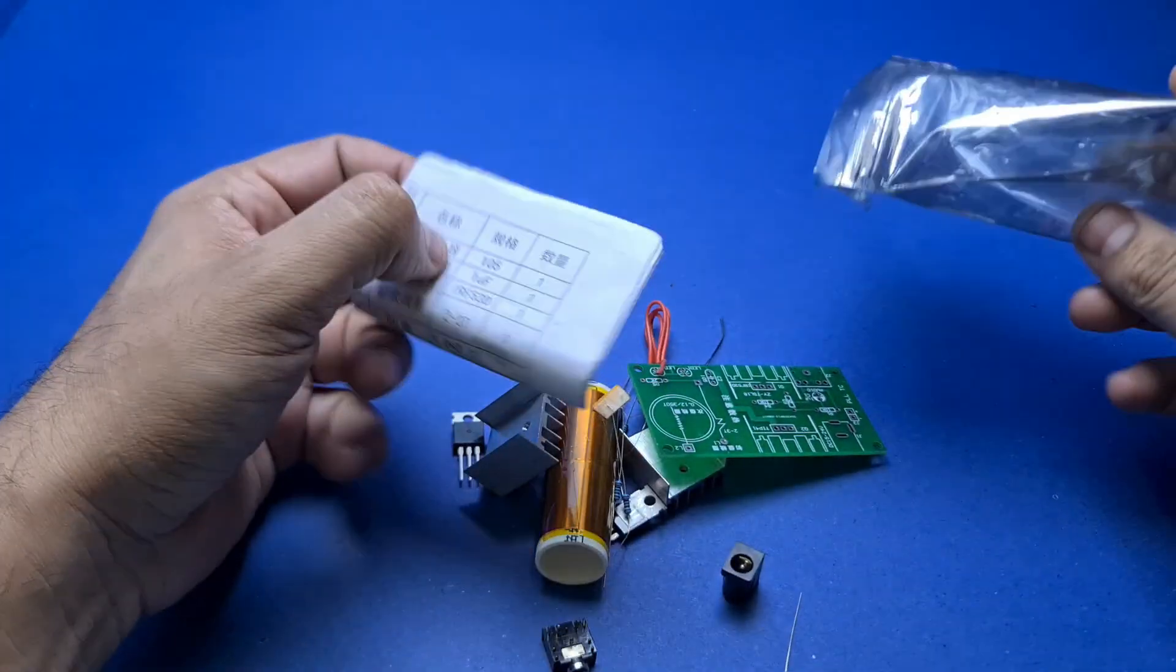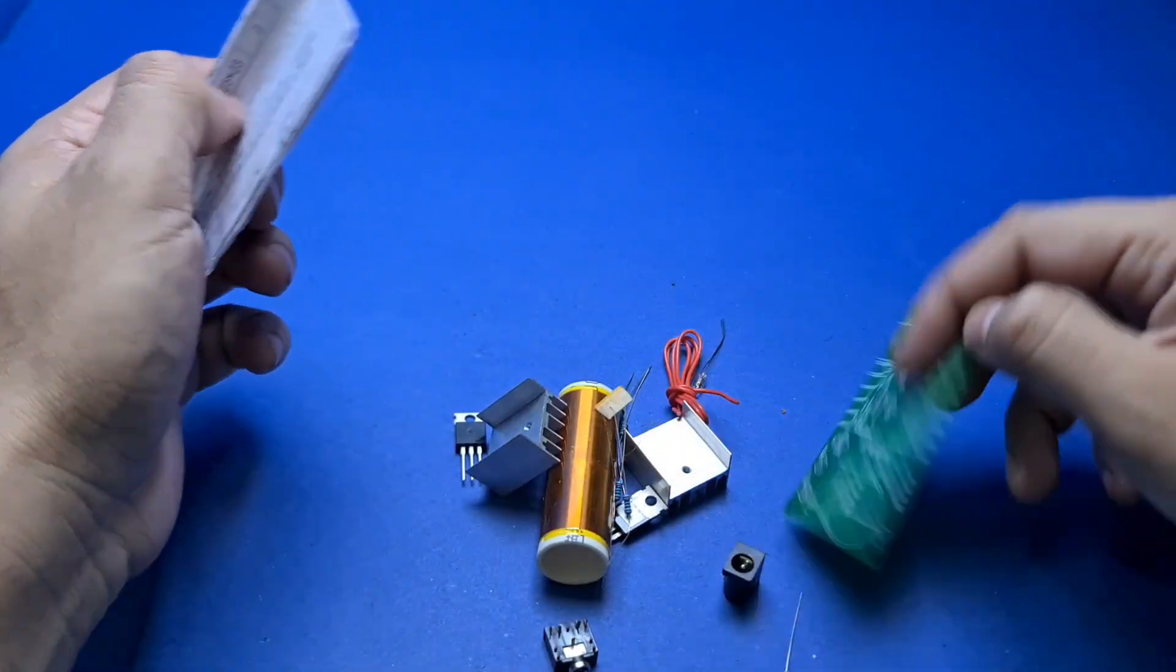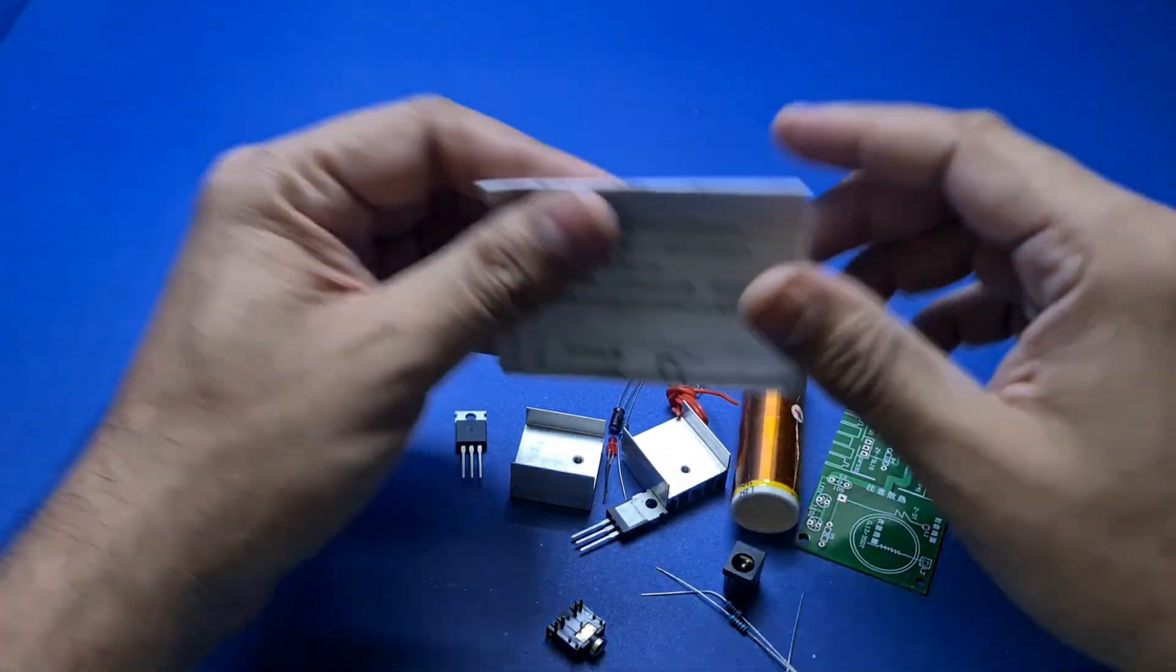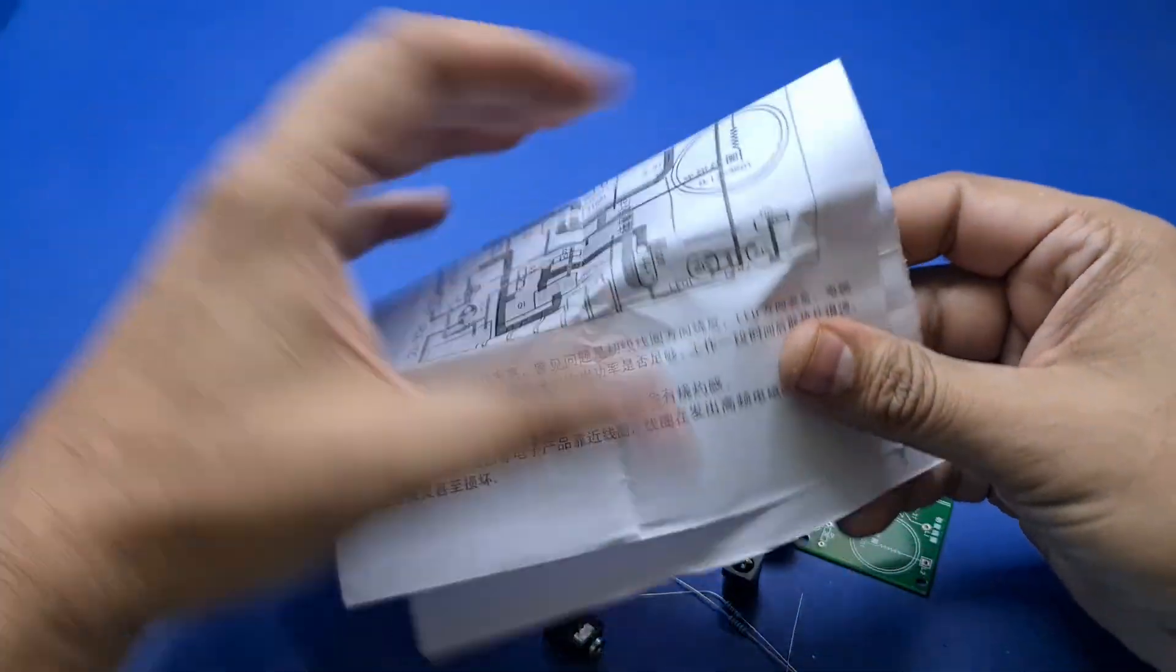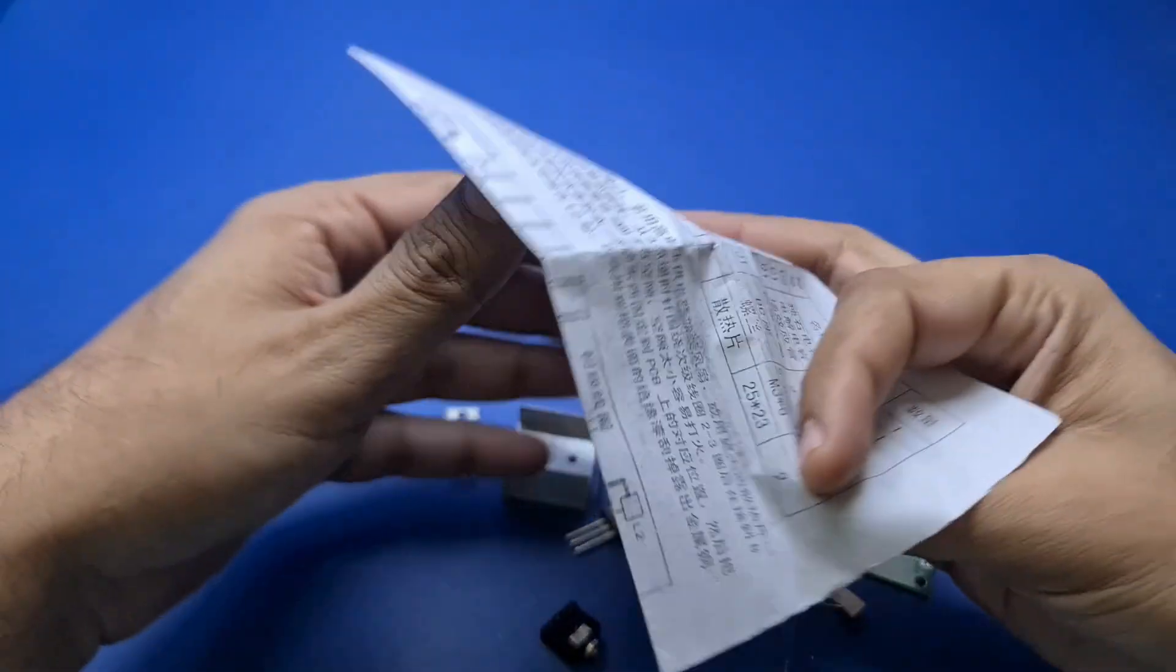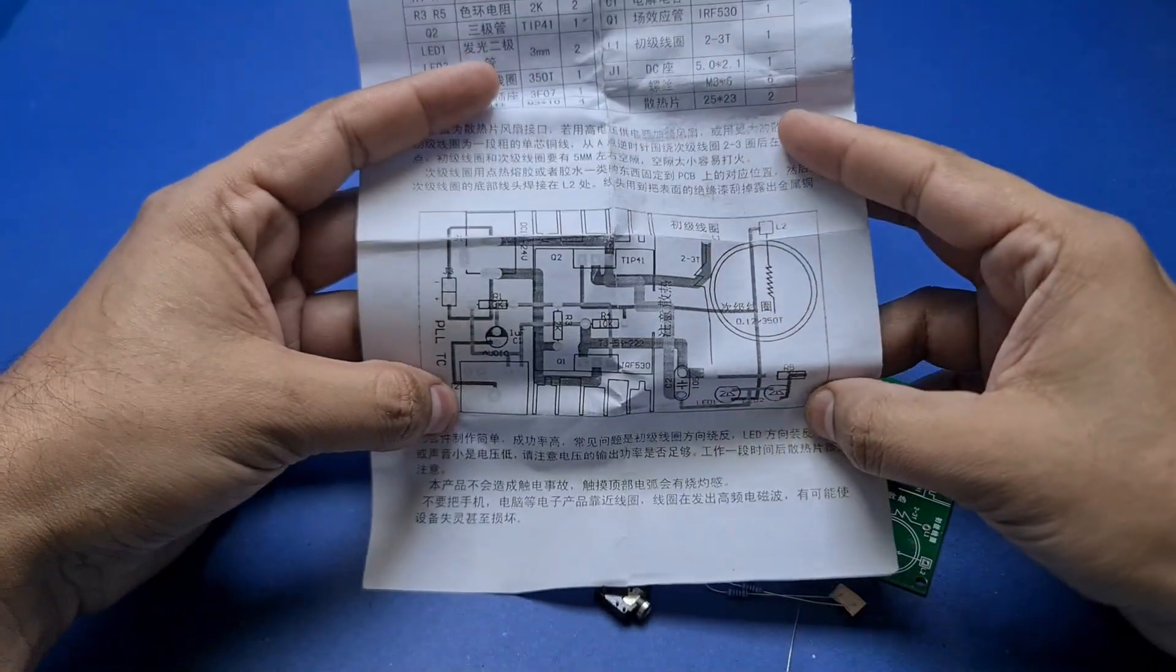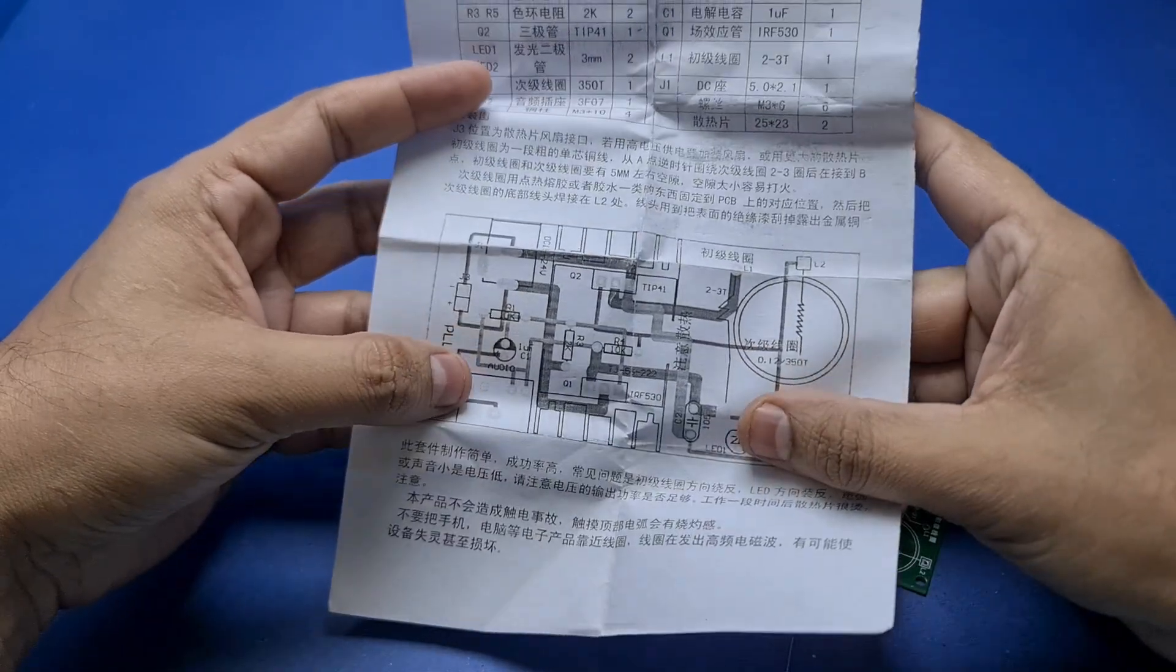This is the PCB and the main coil, and the instructions manual inside. It's just a single page which shows the PCB connections and it's in Chinese.